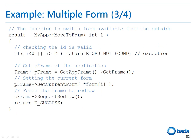This moveToForm function changes the current form displayed based on the form number input parameter. Here, I checked the index range for safety, and if the index is within the range, the frame is acquired from the application. The required form is then assigned as the frame's current form. Then, the requestRedraw function of the frame is called to reflect this change.